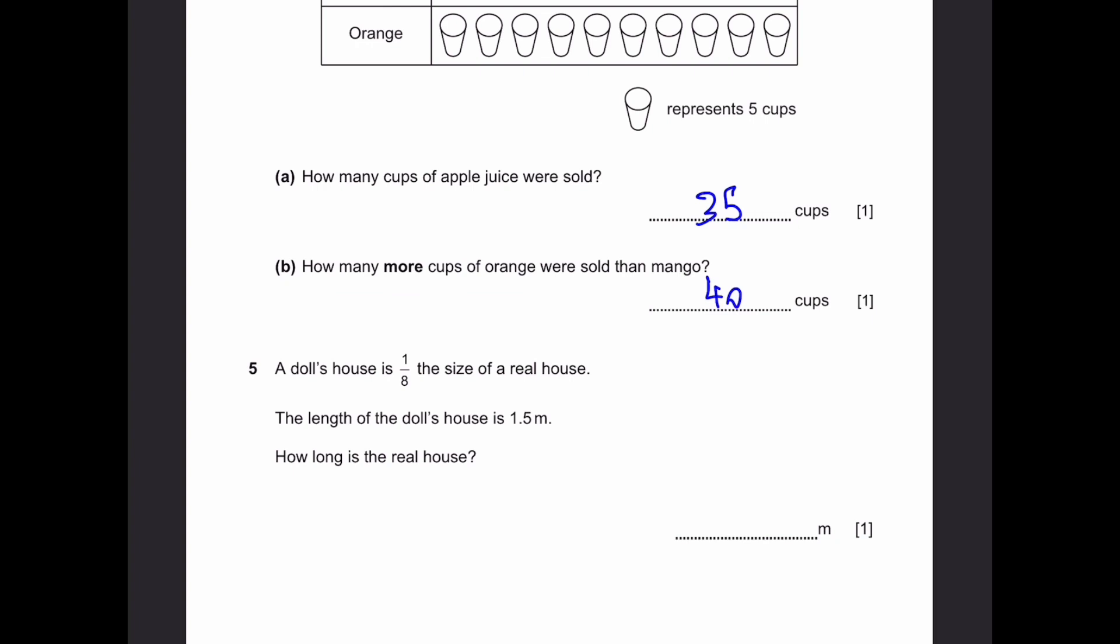Question 5. A doll's house is 1 eighth the size of a real house. The length of a doll's house is 1.5 meters. How long is the real house? 1.5 multiplied by 8. That's equal to 12 meters.